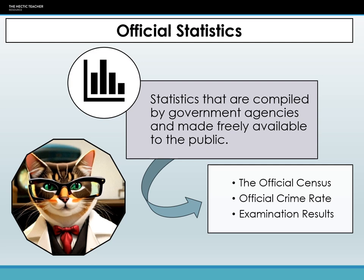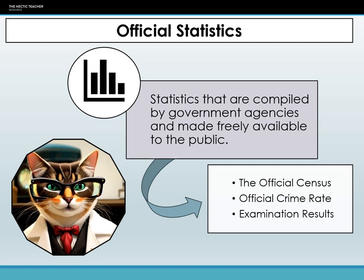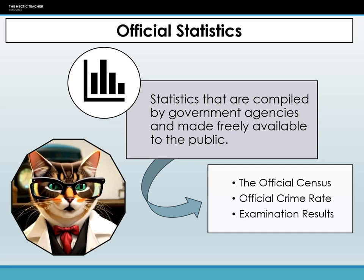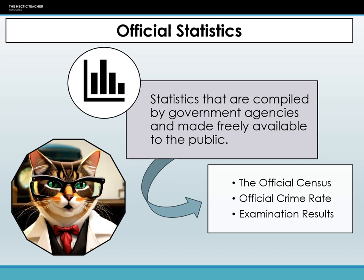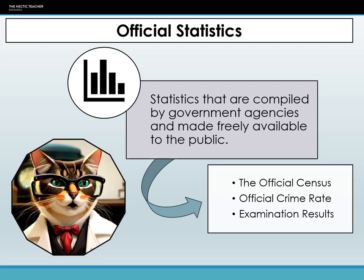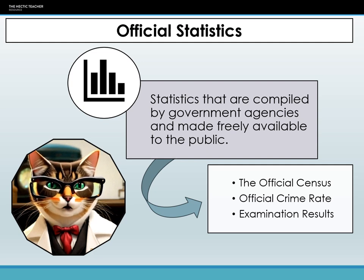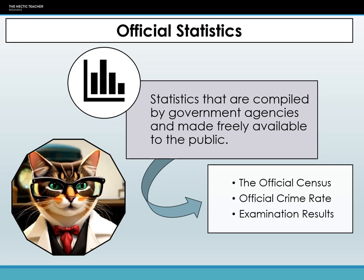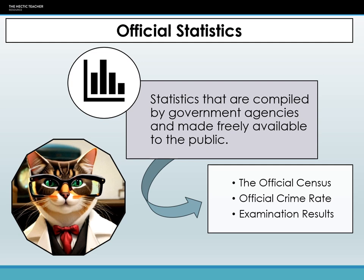However, when utilized in sociological frameworks, these statistics have inherent constraints. The predominantly quantitative character of official statistics may neglect the intricate qualitative dimensions, potentially failing to encapsulate the complexities and subtleties of societal dynamics. There also exists a possibility for validity discrepancies. For instance, declared crime rates may not encompass the latent figures of crimes that remain unreported. Moreover, the influence of political motivations or biases can impact these datasets' accumulation, interpretation, or explanation, which may distort the actual representation.